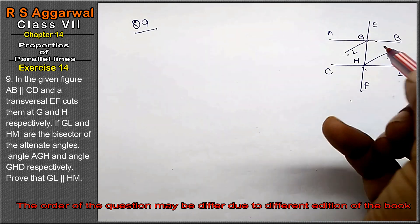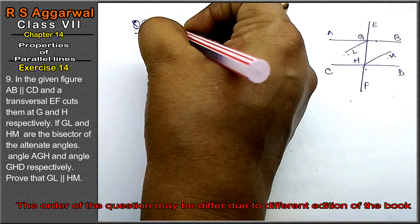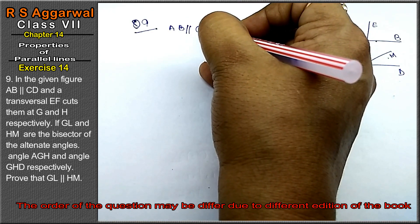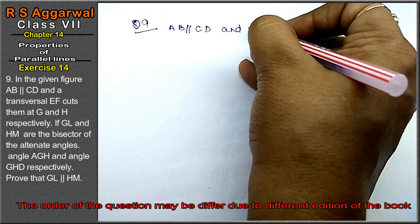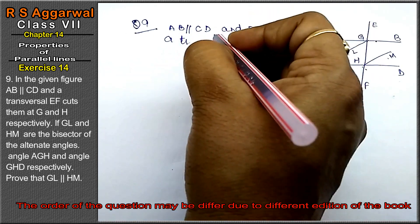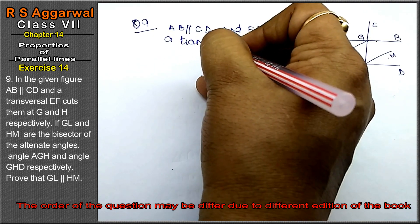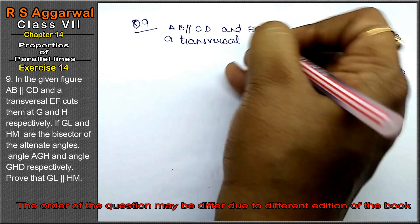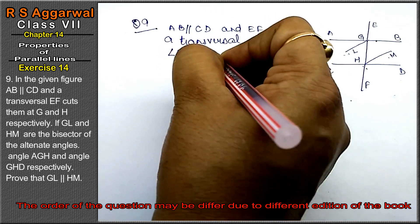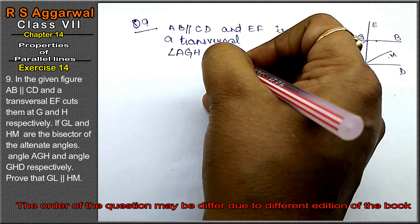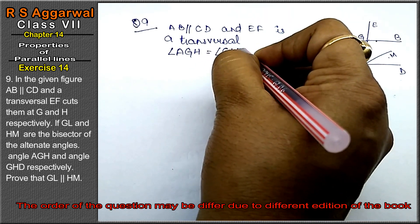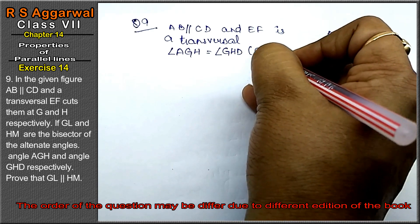Right friends, now we know that AB is parallel to CD, and EF is a transversal. So our angle AGH is equal to angle GHD, because alternate angles are equal.